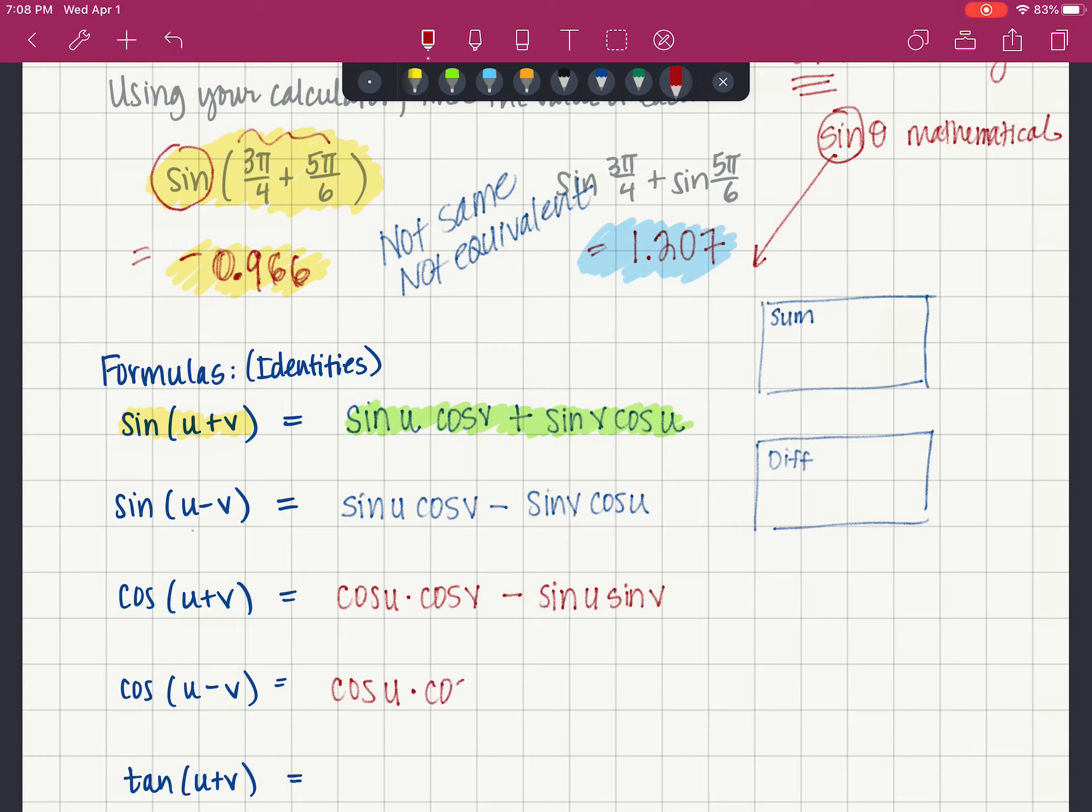The next one, cosine of u minus v, is cosine of u times cosine of v. And then you've got it, right? What's the sign? Well, here it's the opposite sign. When your product is the same trig function, cosine cosine, then your sign, S-I-G-N, your operation between the two products is the opposite of what's between the two angles.